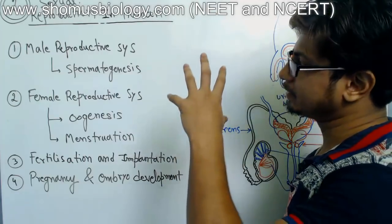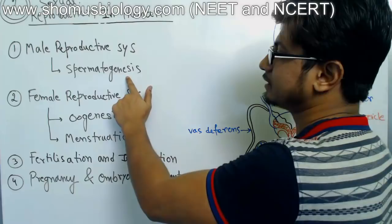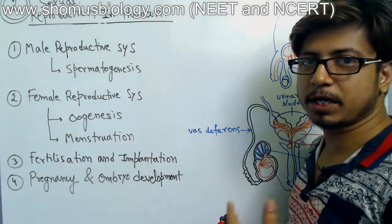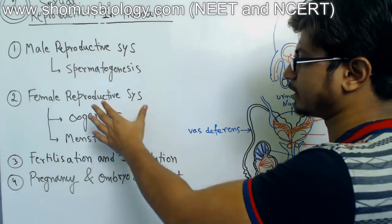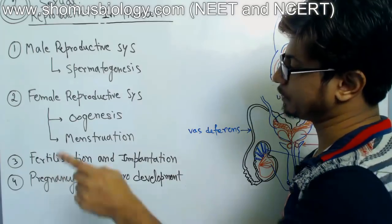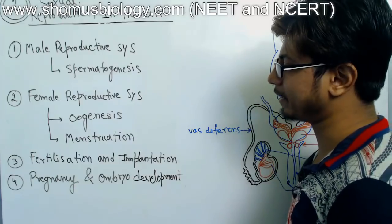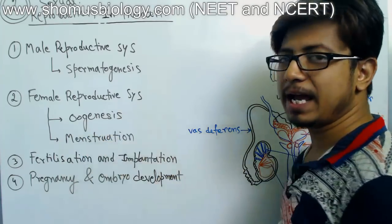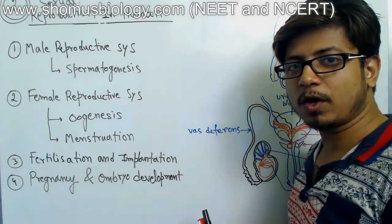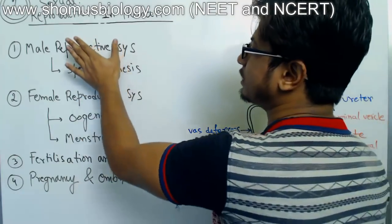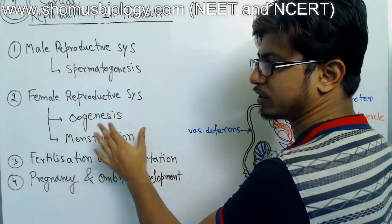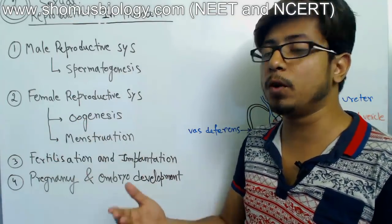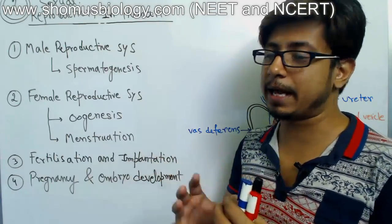The first component is the male reproductive system and its anatomy, to understand gametogenesis — that is spermatogenesis, which is the production of sperm, the male gamete. The second is the female reproductive system anatomy with gametogenesis known as oogenesis, which is the production of the ovum or egg. All these are pre-fertilization events that take place before the fusion of both gametes.